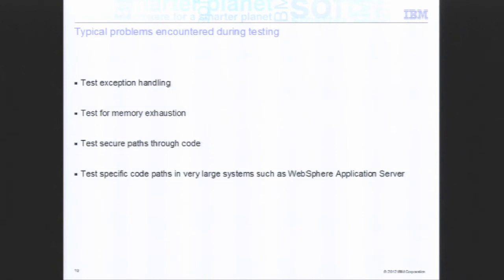Now let's look at the problems we have in testing. If you imagine a try-catch block where a function may throw an exception, and you need to test the code in the exception catch to make sure it works properly, you can do that using BCI. If you have an exception block with three exceptions and you want to drive all those paths, you can do that with BCI without changing your test. That's why BCI is powerful.